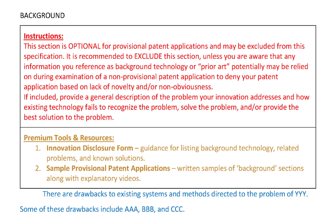I've pulled up the template provisional patent application on screen, and we're looking at the background section of that specification. This section is optional, and often I would recommend excluding it — especially if you have not done a patent search, don't have real information about other types of technology out there, haven't thought about what problem you're solving, and haven't drafted anything about your problems and solutions. I would probably just go ahead and omit this section at this point.